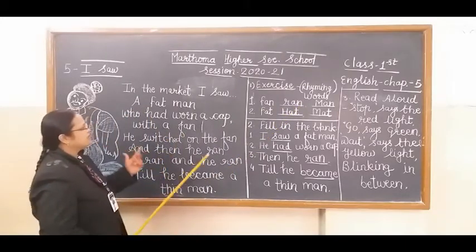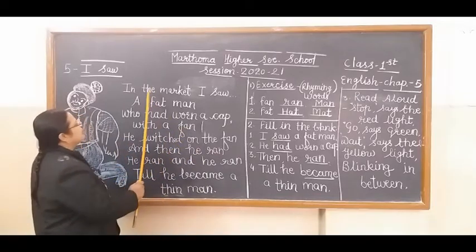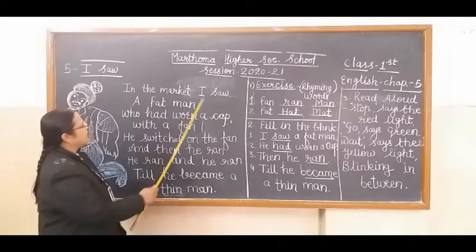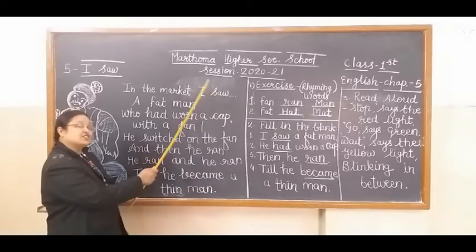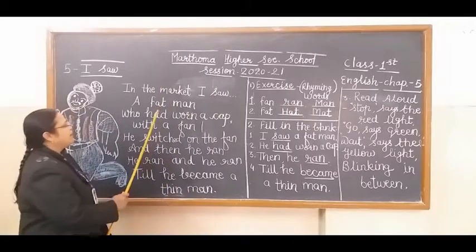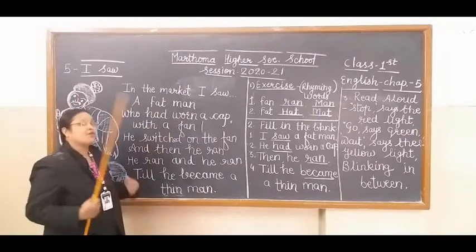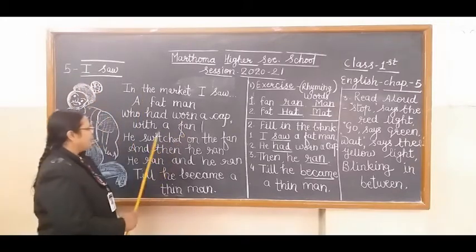Let me discuss about some verbs which are in this poem. So here verb is S-A-W saw. See, saw. See, saw. Number two is worn. Wear, worn. Wear, worn.